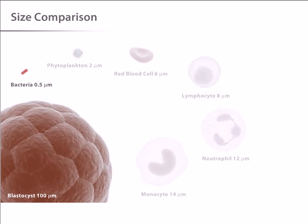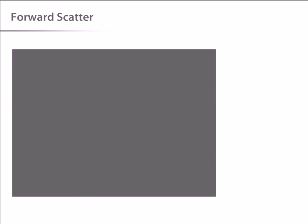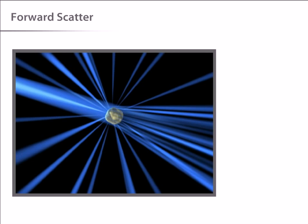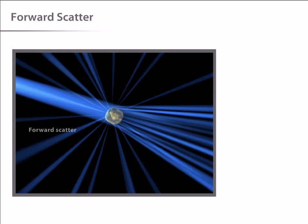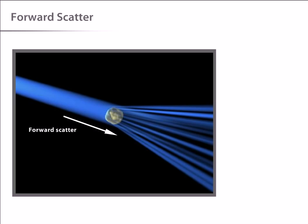Now let's see how laser light is used to detect individual cells in the stream. As a cell passes through the laser, it will refract or scatter light at all angles. Forward scatter or low angle light scatter is the amount of light that's scattered in the forward direction as laser light strikes the cell.